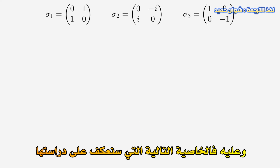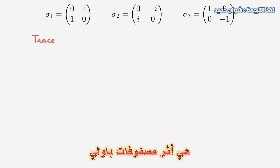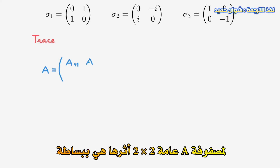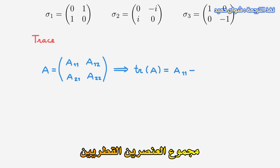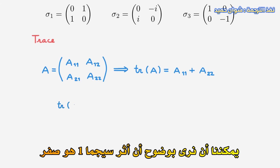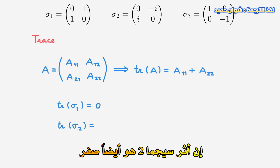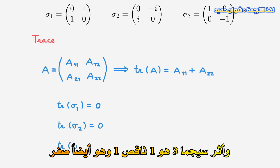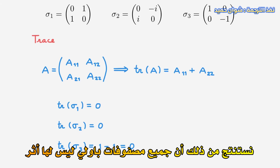So the next property we're going to study is the trace of the Pauli matrices. For a general 2x2 matrix A, the trace is simply the sum of the diagonal elements. We can trivially see that the trace of sigma-1 is 0, the trace of sigma-2 is also 0, and the trace of sigma-3 is 1 minus 1, which is also 0. So that means that all the Pauli matrices are traceless.